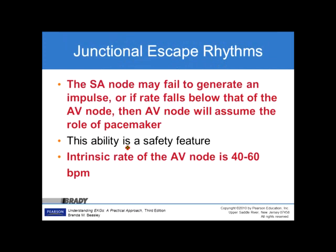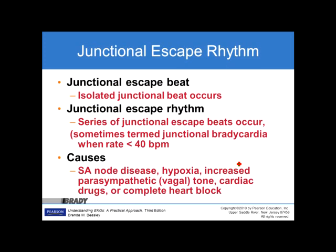A junctional escape rhythm occurs when the SA node fails to generate an impulse, or if the rate falls below that of the AV node, causing the AV node to assume the role of pacemaker. This is a safety feature providing a backup pacemaker site. The intrinsic rate of the AV node is 40 to 60 beats per minute. A junctional escape beat is one isolated junctional beat with no P wave. A junctional escape rhythm is a series of these beats, sometimes termed junctional bradycardia when the rate is less than 40 beats per minute.